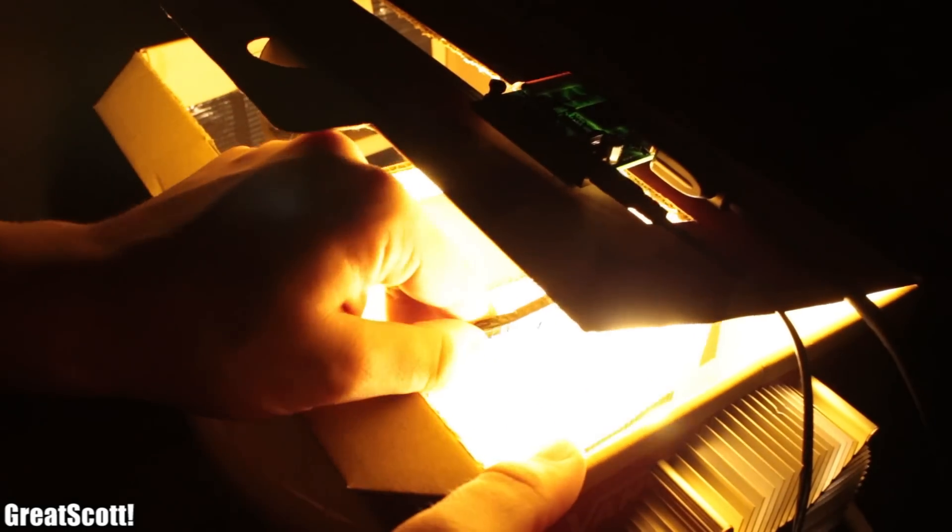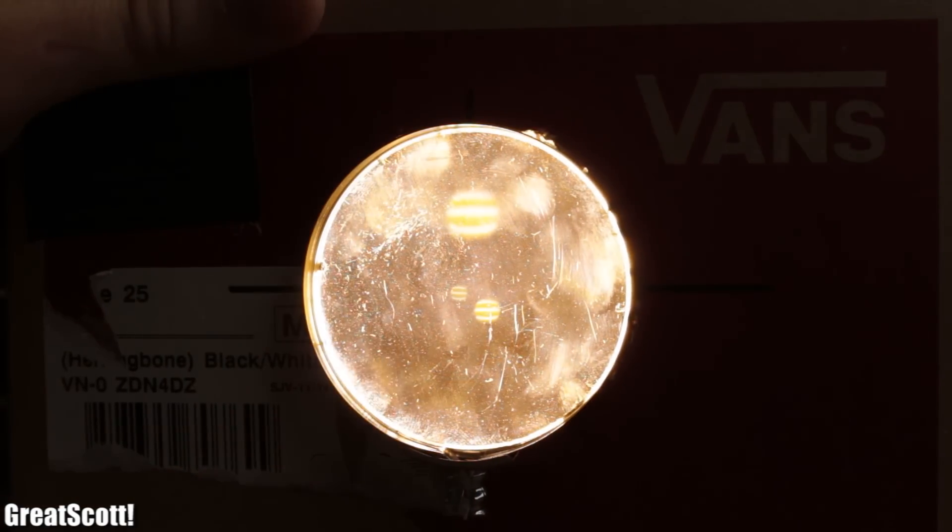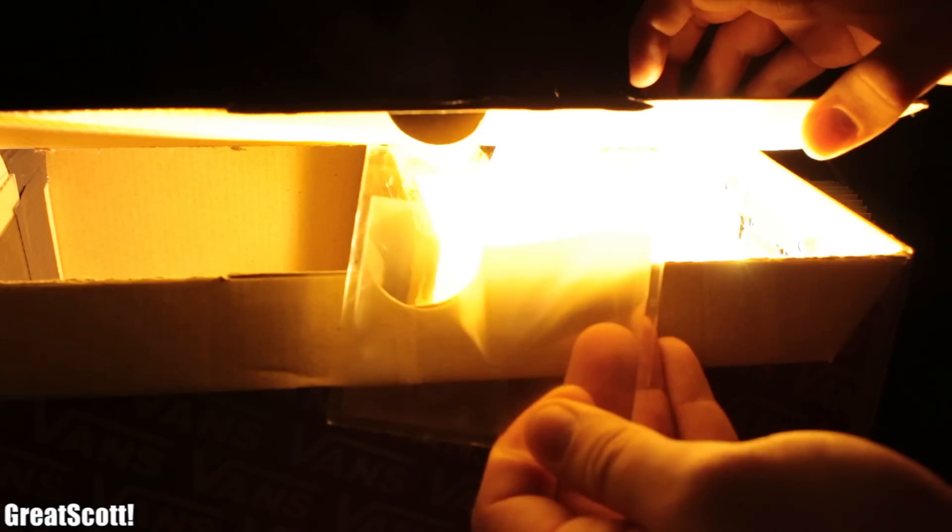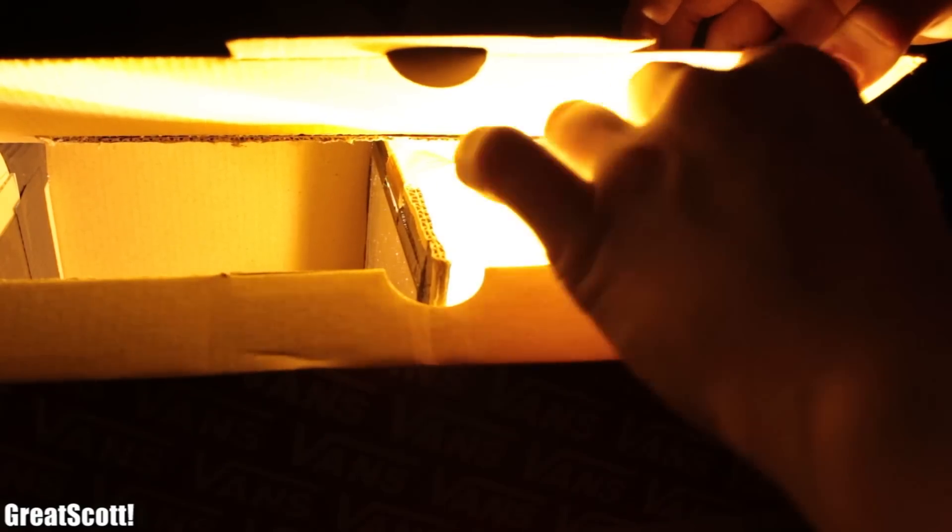But the main problem was my Fresnel lens, which did not diffuse the light well enough. That is why there is only a circle of the video. After trying out the Fresnel lens from the real projector, I got to see more of the picture, which would lead to a complete image if we increase the size of the lens. And maybe I will do that in a future project.